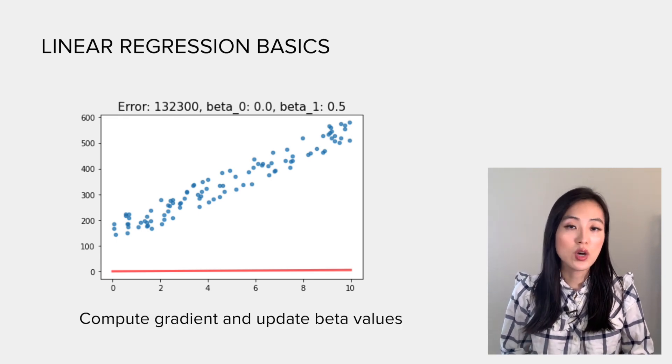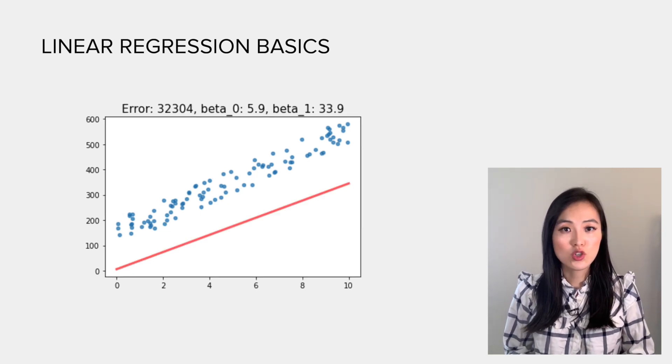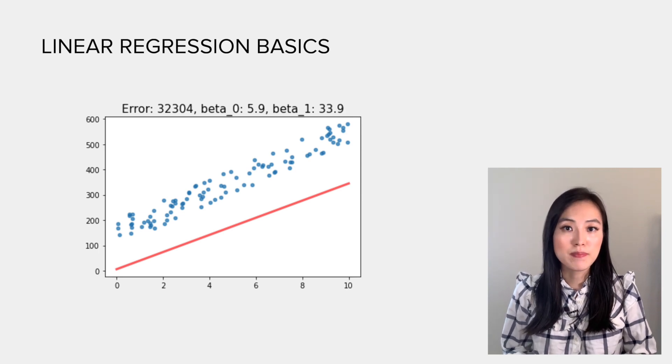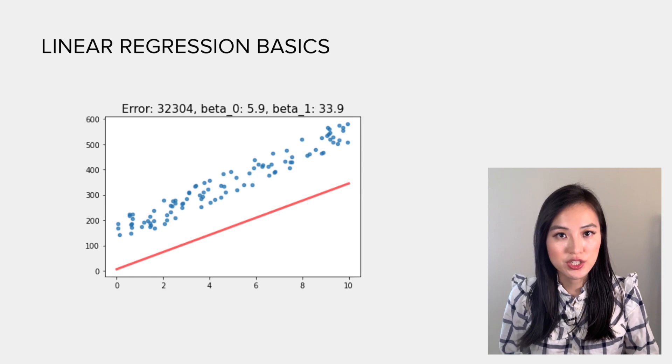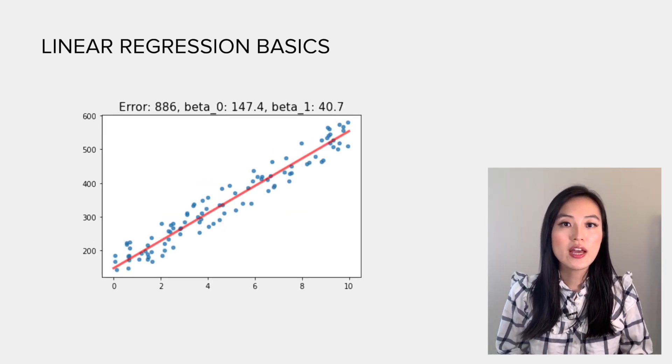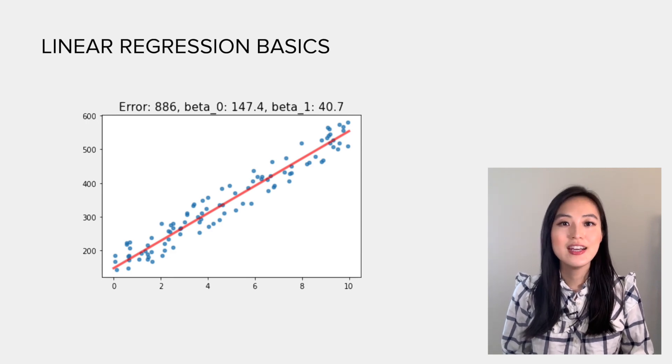So we compute the gradients and use them to update the values of betas. Then we plot it again. We see the error drops and the predictions are more accurate, so the red line becomes better to model the data. After a few iterations, the error becomes smaller and smaller, and finally we can get the minimum error and betas obtained are optimal.